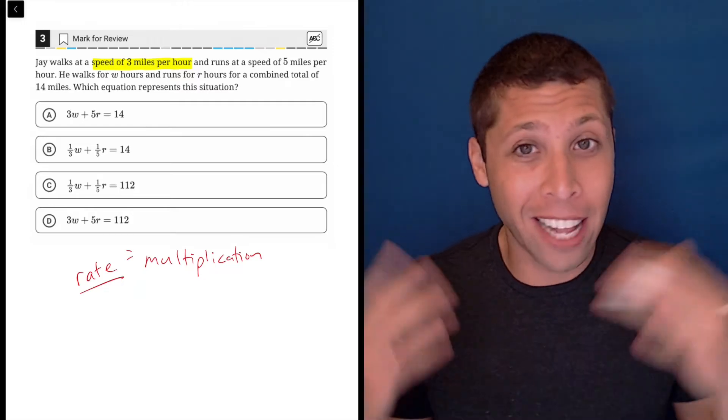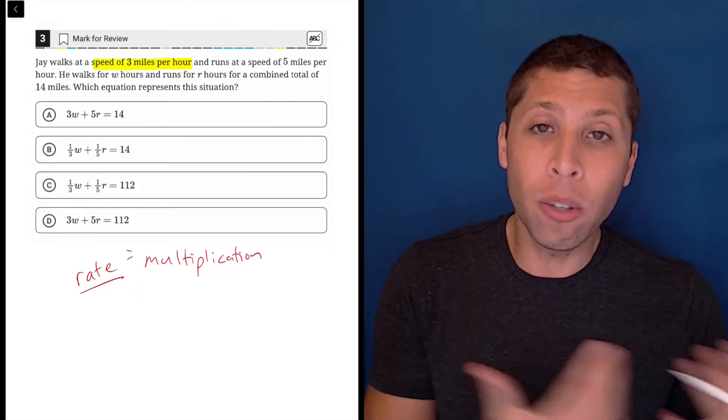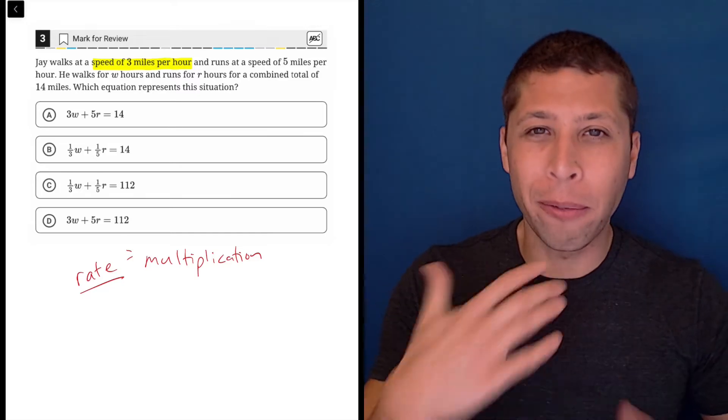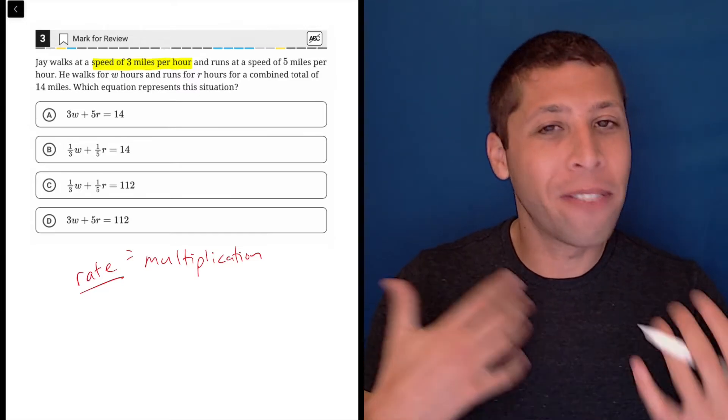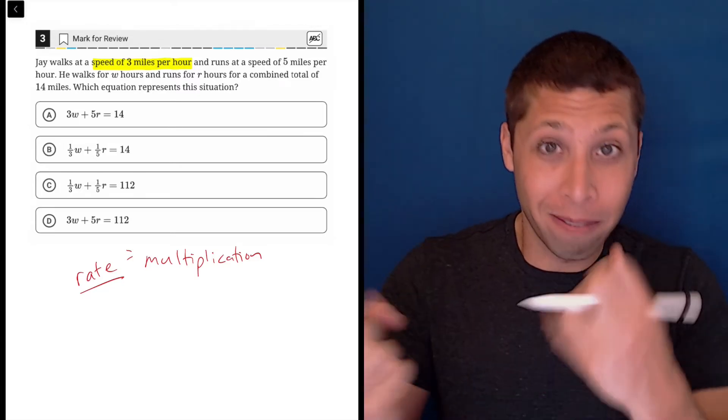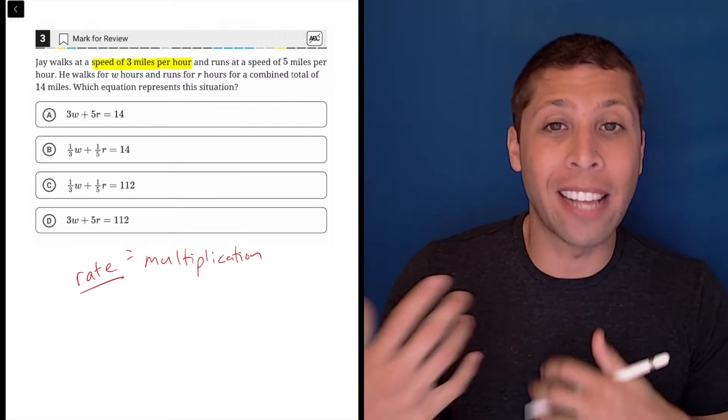First of all, speed, right? That's a rate. And then the way the units work, miles per hour, right? If we have two units involved, then that means we're kind of talking about it as a rate, as a comparison.